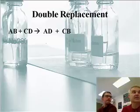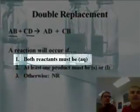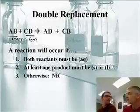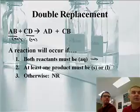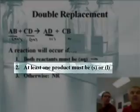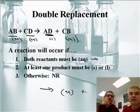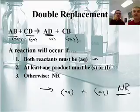On double replacement reactions, this is the reaction as you recall: AB plus CD. You have two couples, they go to the dance and trade partners. The big question is, does the reaction even occur? There are three tests. First, both reactants must be AQ. Second, at least one product must be S or L. If this is S and this is AQ, it works. If they're both AQ, it doesn't work. There is no reaction, you would just write NR.